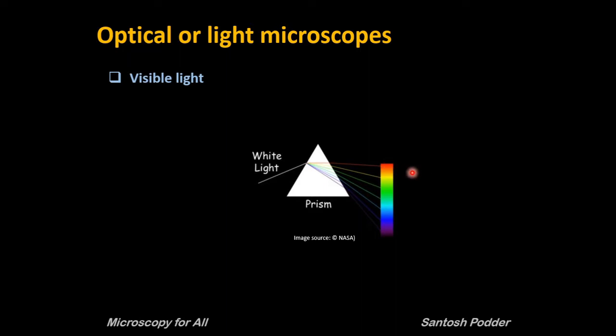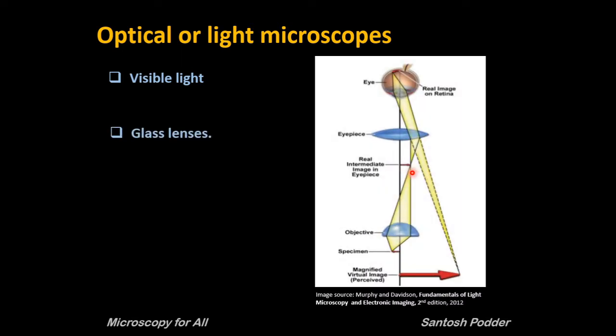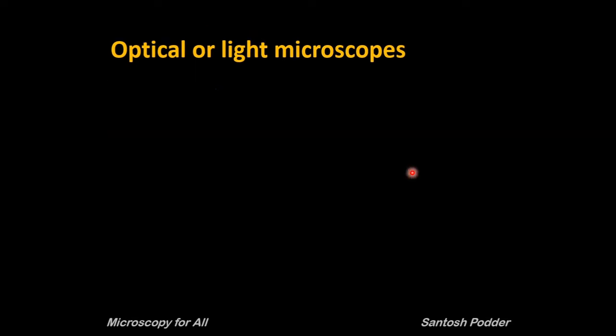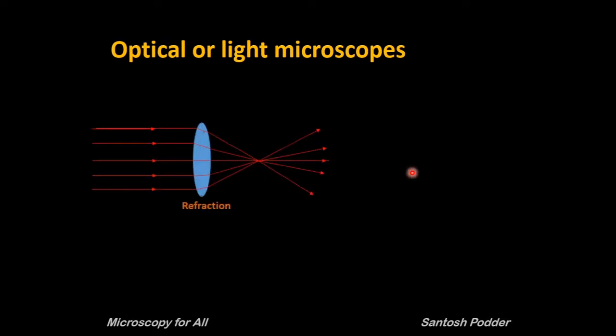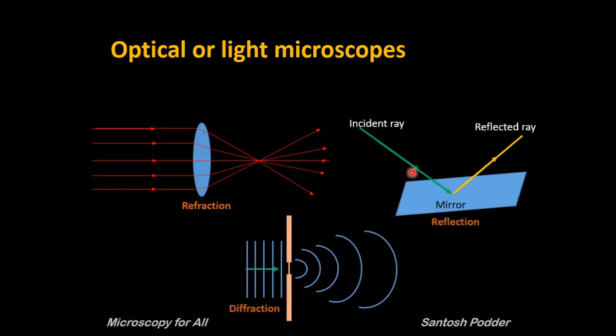Optical or light microscopes use a system of glass lenses and use different properties of light such as refraction, diffraction, and reflection, to generate a magnified image of small objects so that you can see them.